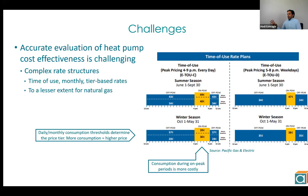This complexity also exists for natural gas rates, although to a much lesser extent. Natural gas rates don't vary by season and time of day, but they also have tiers, meaning more consumption comes at a higher price for natural gas too. That effectively means people pay more for natural gas in winter than during summer.